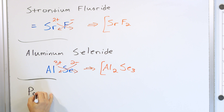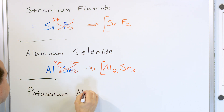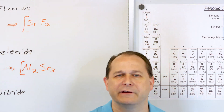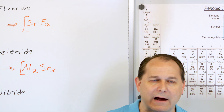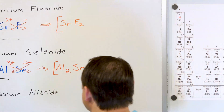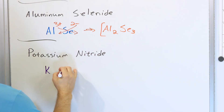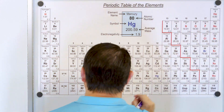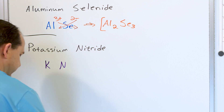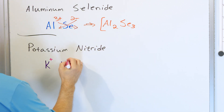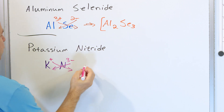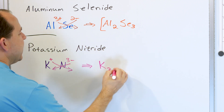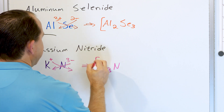Let's talk about potassium nitride. Potassium is a metal on the left-hand side, and nitride — you might think it's a polyatomic ion, but it's actually just the ion form of nitrogen. Nitrogen becomes nitride. Potassium is K and nitrogen is N. Potassium wants to lose an electron, so it'll be a plus one, and nitrogen wants to gain one, two, three — so it'll be a negative three. When we do the crisscross, potassium gets a subscript of three and nitrogen gets a subscript of one: K₃N.